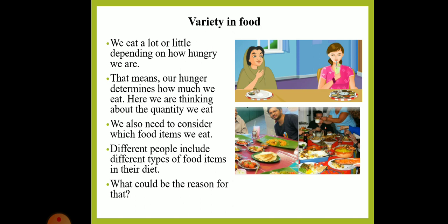Let us continue with the next topic: Variety in food. We eat a lot or little depending on how hungry we are. That means our hunger determines how much we eat. Here we are thinking about the quantity we eat. We also need to consider which food items we eat.